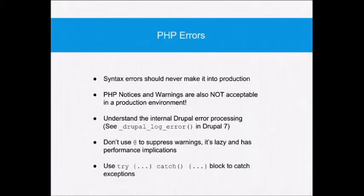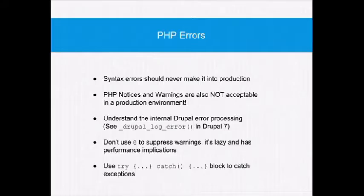Don't just use the @ symbol to suppress warnings — there are actually performance implications around that. Try-catch blocks are useful, especially with things like saving entities — you can catch errors as they happen and try to adapt to them. Don't forget about the actual error output in Drupal: set your error messages to be only visible by admins, and make sure the error log gets truncated after a certain amount of time — just long enough for you to go back a few days and make sure things are good.